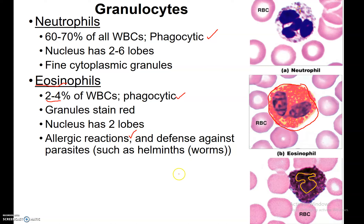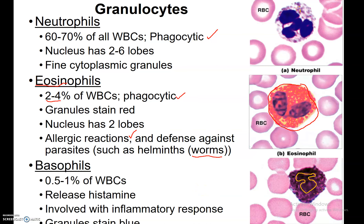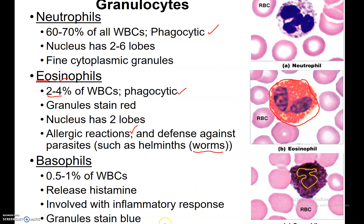You'll find lots of eosinophils during allergic reactions, and also when somebody has parasites or worms — you'll find a lot of eosinophils in dogs and cats with a worm infection. Basophils are very few, about 0.5 to 1%. These guys release histamine, which is part of what gives you swelling during an allergic reaction or tissue damage. They are involved in the inflammatory response, and that swelling is partly in response to histamine. The granules are purpley blue.